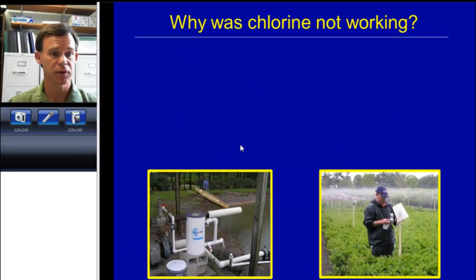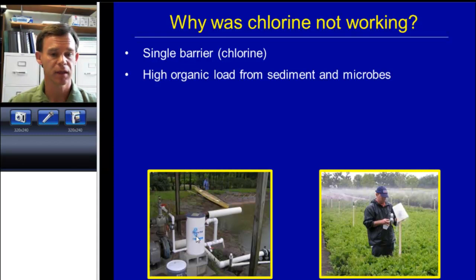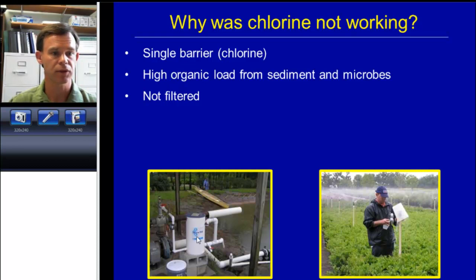Let's take that one example of a grower where the chlorine system wasn't working. In most cases, chlorine did seem to be providing adequate treatment, so what was happening in that one location? Well, there was not a multiple barrier approach — there was just one barrier, which was chlorination with tablets. There was a high organic load from the sediment and the sunlined pond, and also a high microbial load. The incoming water before chlorination was not filtered, so that water had a very high demand, and it's unlikely that the chlorine would be able to control any target organisms such as pathogens because of all the background noise and demand from the sediment and other microbes.